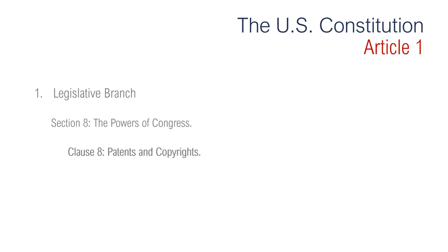Section 8, Clause 8 is regarding patents and copyrights. Authors and composers' works are protected by copyrights established by copyright law, which currently is the Copyright Act of 1976 as amended. Copyrights are valid for the life of the author or composer plus 70 years. Inventors' works are protected by patents, which vary in length of protection from 14 to 20 years. A patent gives a person the exclusive right to control the manufacture or sale of their invention — another term we use for this is intellectual property.